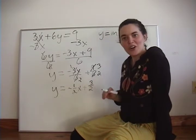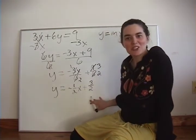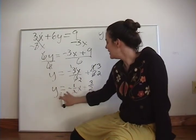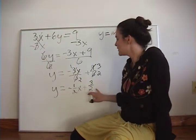So, we've converted to the slope-intercept form y equals mx plus b.